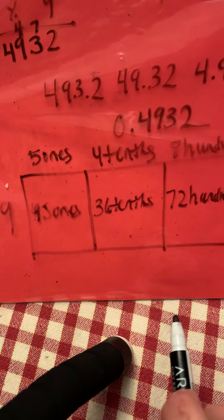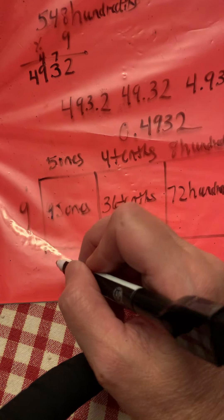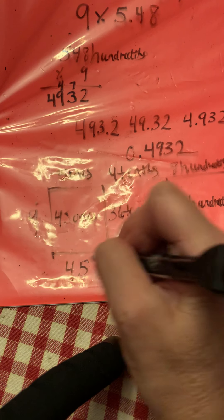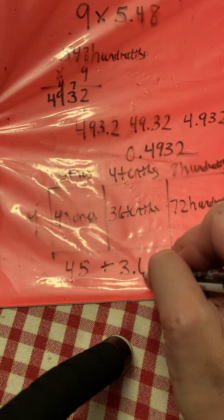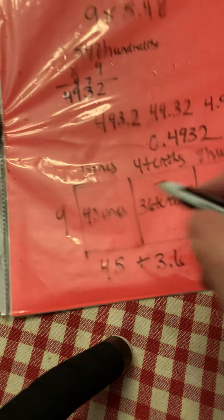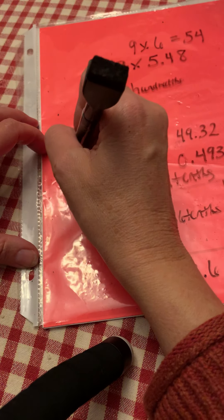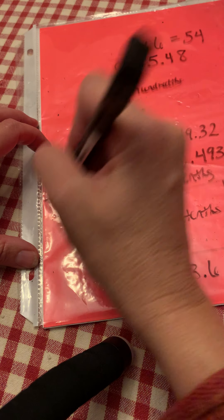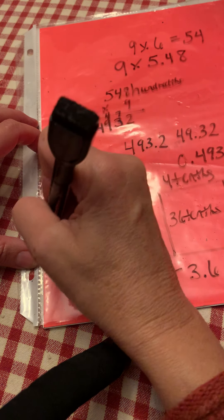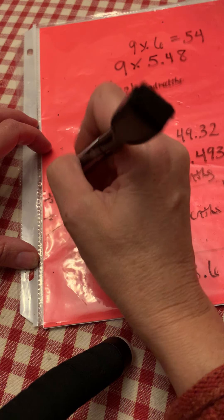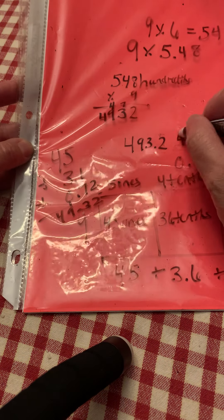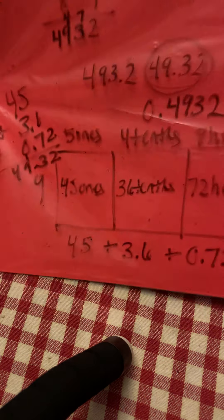Next step, we write our standard form. Not 45? Yeah. 45 plus 36 tenths is 3.6 plus 72 hundredths. We can set that up. 45 plus 3.6 tenths plus 72 hundredths. Six plus seven is 13. Eight, nine. My answer is 49.32 hundredths.